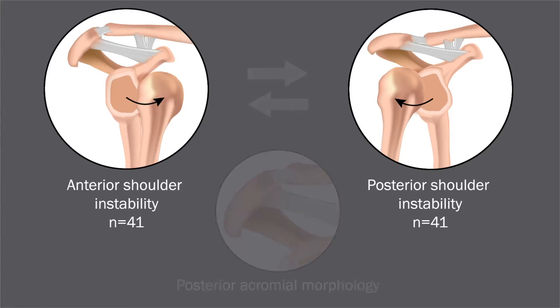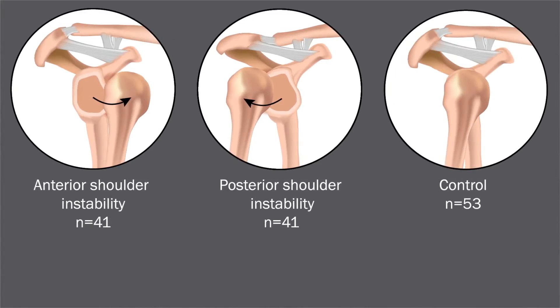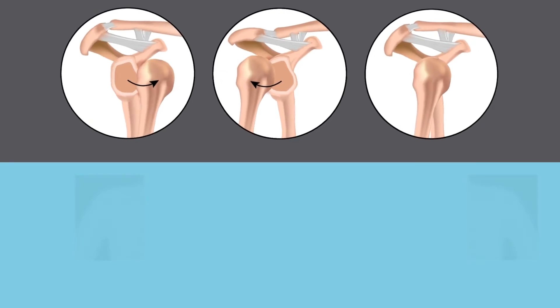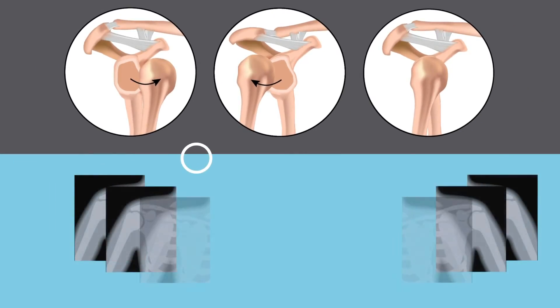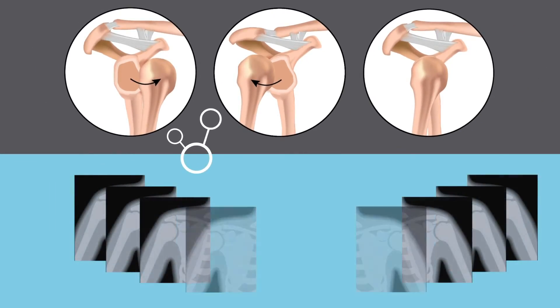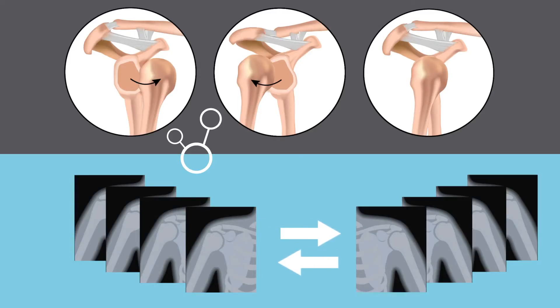There were also 53 control shoulders that had no history of instability. Radiographic measurements were taken and correlated with the type of instability and compared to the controls.